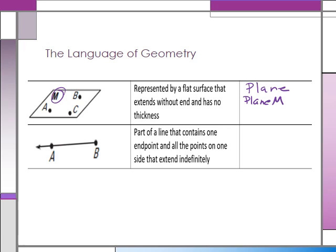Or we can name a plane using three points — A, B, C — in any order. For example, we could say plane ABC, CBA, CAB, BAC, and so on. There are actually eight different ways we can name this plane using those three points.